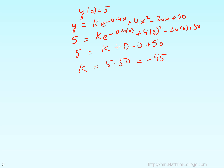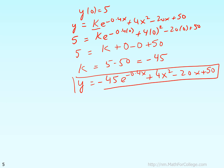Now we have found everything we need. The complete solution is y = −45·e^(−0.4x) + 4x² − 20x + 50. That is the complete solution to this ordinary differential equation. If you need the value of y at a particular value of x, simply substitute that value and you'll get your answer. That is the end of this segment.